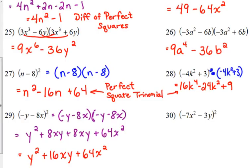Last one, number 30. What are we going to get? Let's see here. Positive 49 x to the fourth. Our outside and inside are both going to give us positive 21. So, when we put them together, we're going to get positive 42 x squared y plus 9y squared.